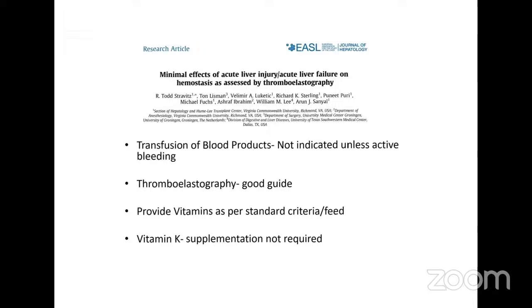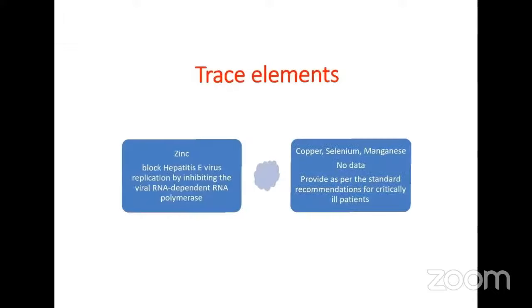Regarding coagulopathy, there is no indication for transfusion of FFP or any other blood products unless there is active bleeding. Thromboelastography helps in understanding which factors are deficient. Vitamin K supplementation is not routinely indicated. Trace elements should be replaced — zinc blocks hepatitis C virus replication by inhibiting viral RNA-dependent RNA polymerase.